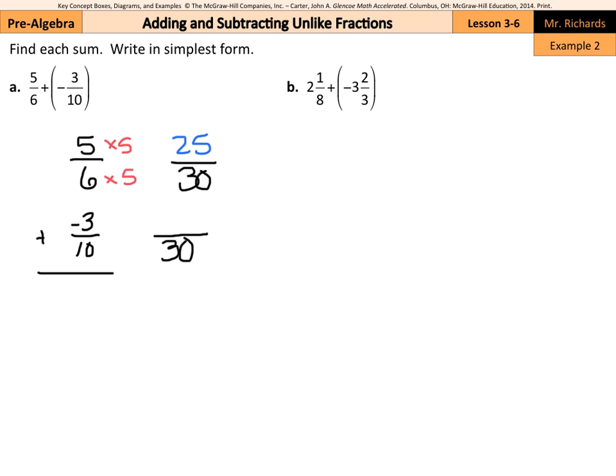And 5 times 5 is going to get us 25. Likewise, for the 10, 10 times 3 was 30. Negative 3 times 3 is going to be negative 9. And now that we're adding these, we'll keep our denominator of 30.